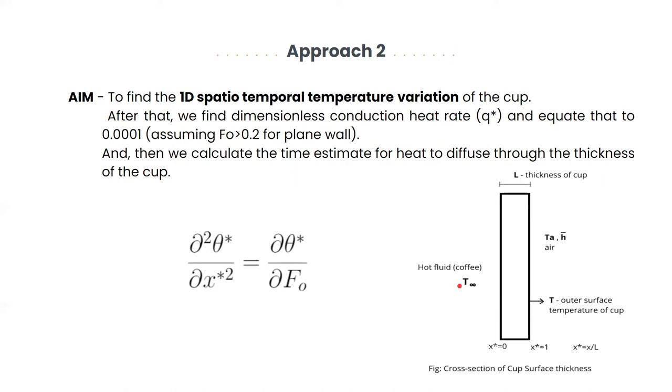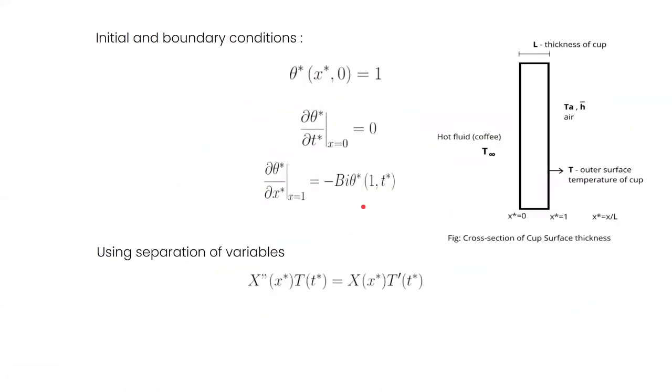Approach 2. From approach 1, we got first order estimates for the required time. In approach 2, we aim to obtain a more accurate solution for the required time by finding the 1D spatial temporal temperature variation of the cup. After that, we find the dimensionless conduction heat rate, that is Q star, and then use that to finally calculate a time estimate for heat to diffuse to the thickness of the cup. The governing equation for our approach would be dimensionless thermal diffusion equation as shown here.